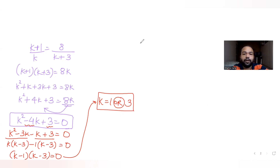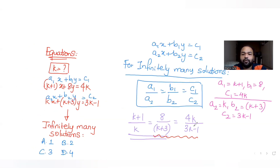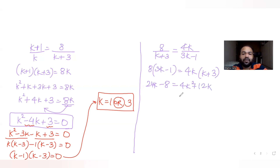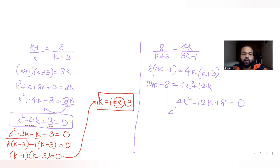Now equating the second and third ratios: 8/(k+3) = 4k/(3k−1). Cross-multiplying: 8(3k−1) = 4k(k+3), giving 24k − 8 = 4k² + 12k. Rearranging: 4k² + 12k − 24k + 8 = 0, i.e. 4k² − 12k + 8 = 0. Dividing by 4: k² − 3k + 2 = 0.